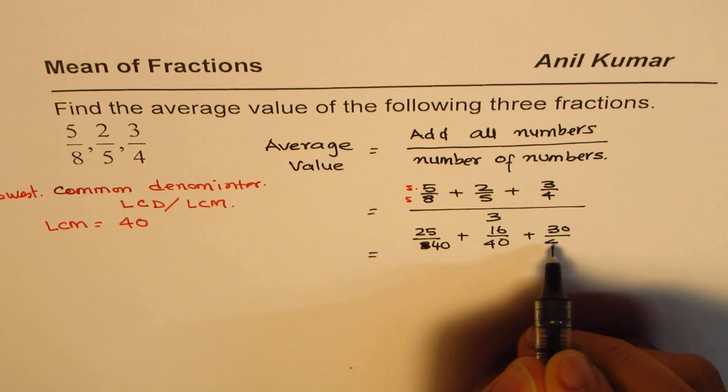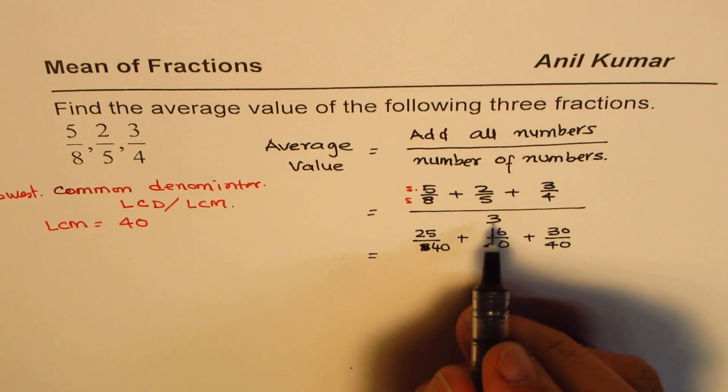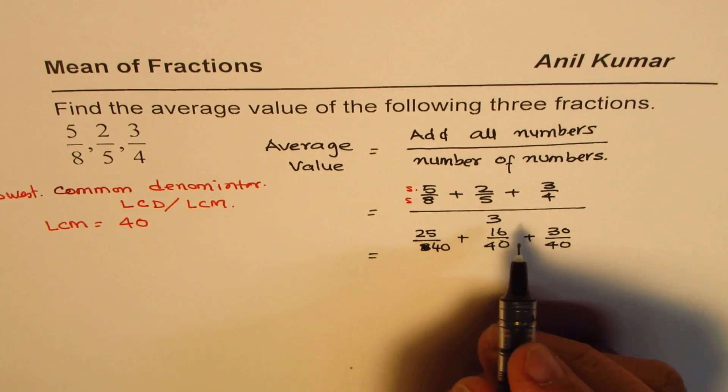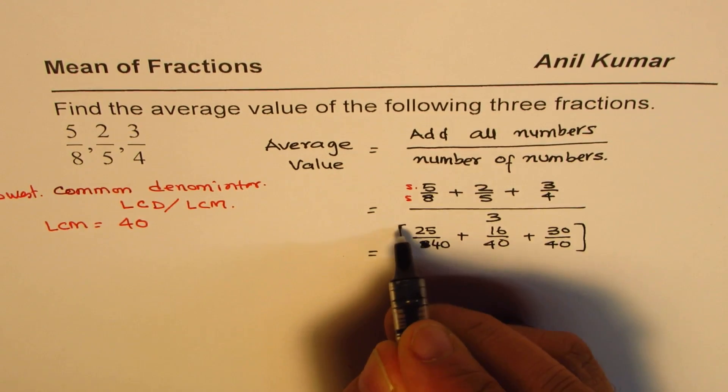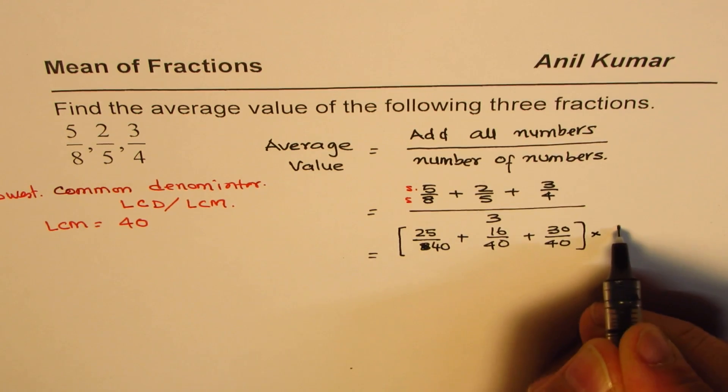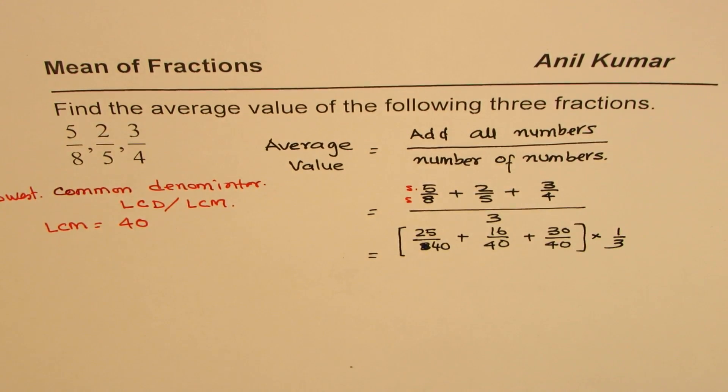Correct. And everything divided by 3, so we could also say everything times 1 over 3. Do you see that? That is also divided by 3. By doing so we have cut down one layer of fraction.